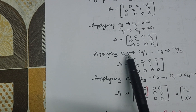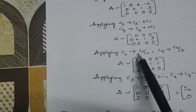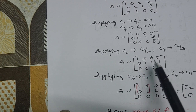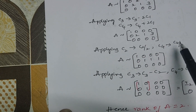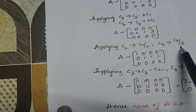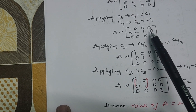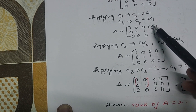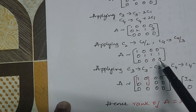Now applying C2 → C2 / 2. Dividing the second column by 2 gives [0, 1, 0]. Then dividing the third column by 4 — sorry, C4 by 3 — gives [0, 1, 0].